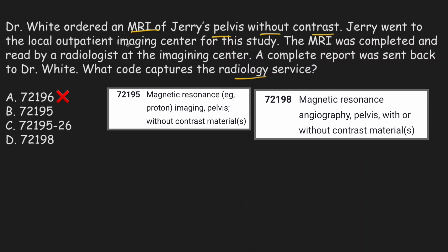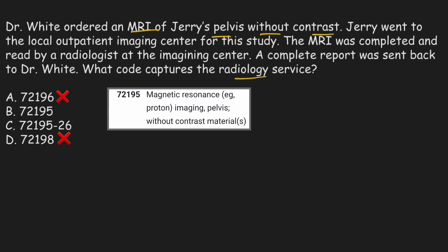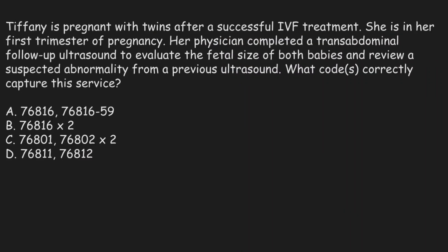Now we are left with option B and option C. The right answer is option B — 72195 — because Jerry went to the local outpatient imaging center, and the MRI was completed and read by the radiologist at the imaging center. No modifier is used because the service encompasses both professional and technical components. Since the entire service is provided at the same location by the same provider, there is no need for an additional modifier. Therefore the right answer is option B.